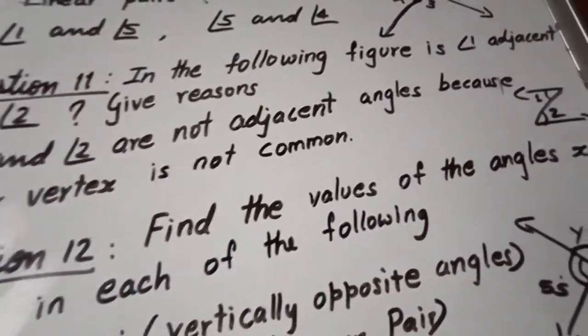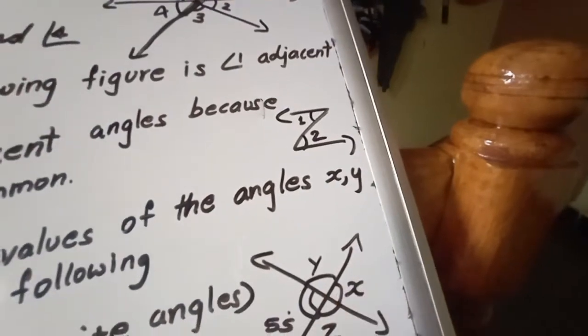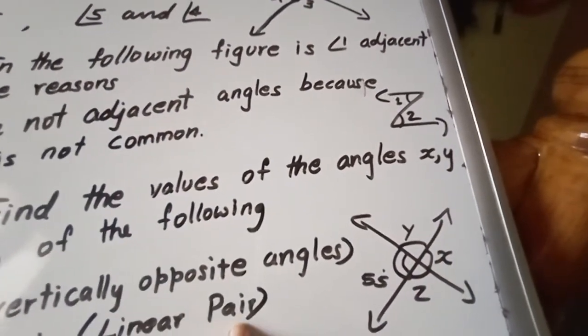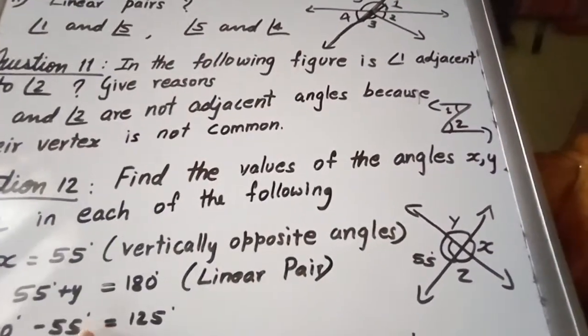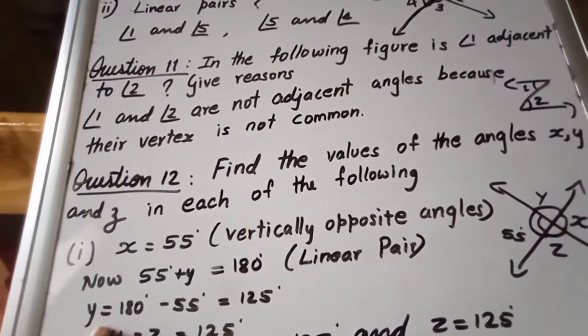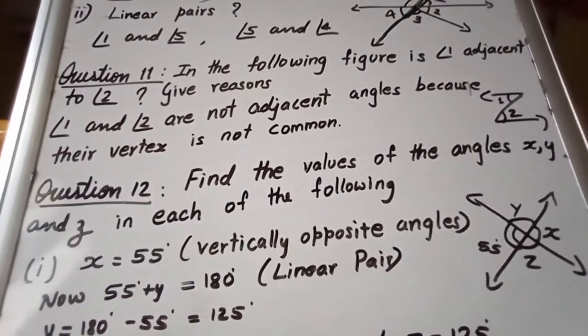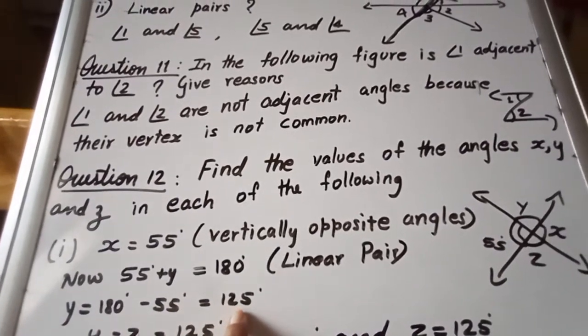Now 55 plus Y, as I told you 55 plus Y, it is one of the straight. So you can take it as a linear pair. 55 plus Y is equal to 180 degree. Then you can find out very easily Y is equal to 180. 55 you transfer, then it becomes minus 55. We will get 125 degree.